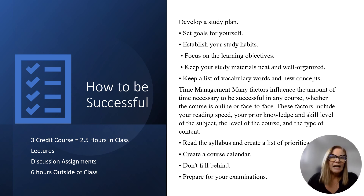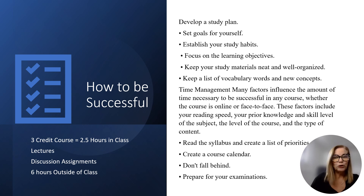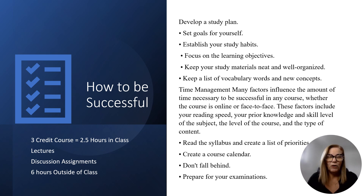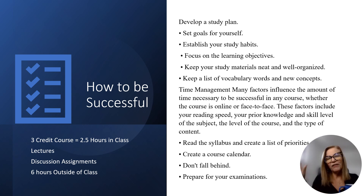If you look at this course as a course, you're just deciding what hours you take it — that doesn't mean it's at your own pace. This is a three-credit course, and students taking it in person would spend two and a half hours in class a week. You need to allot two to three segments of time — two and a half hours — going over the lectures and the discussion assignments. The discussion assignments are technically the class participation, and that's how we determine class participation.